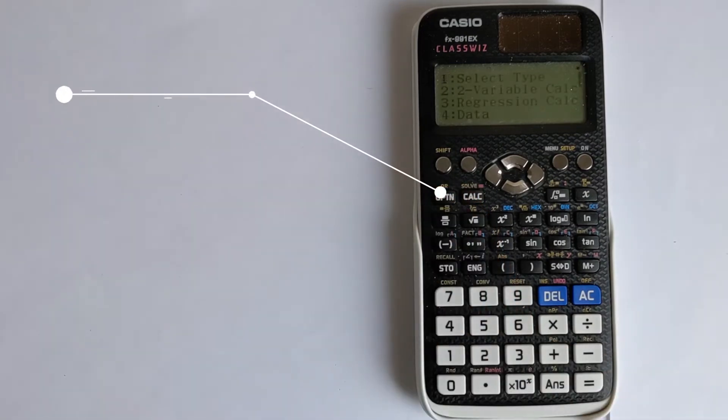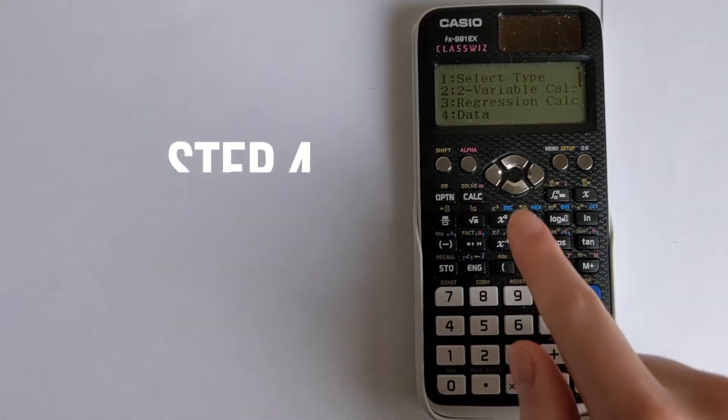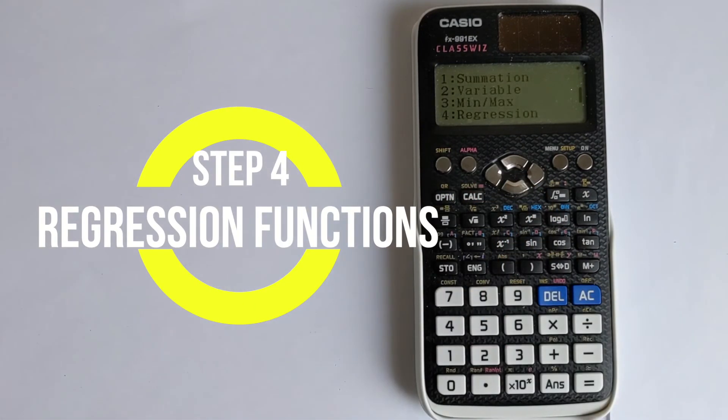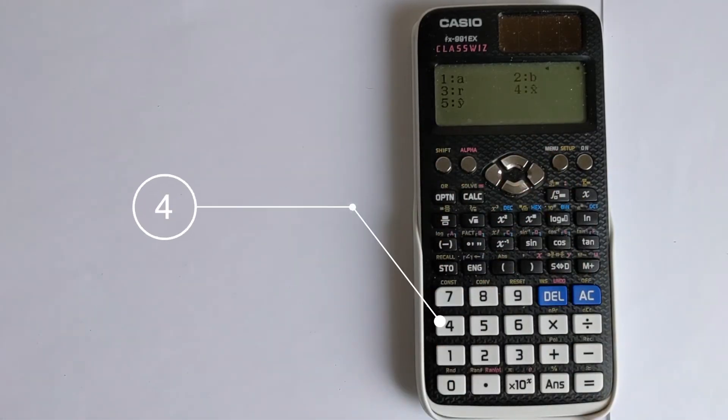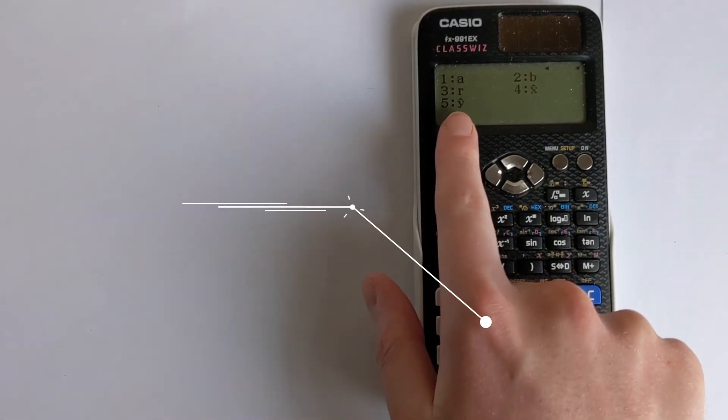Then you want to press the option button, which will bring up this menu. You need to press the down arrow, which will give you this regression option. So press 4, and then we want to find the value of y at a given x value, so we want to choose option 5 to find y.